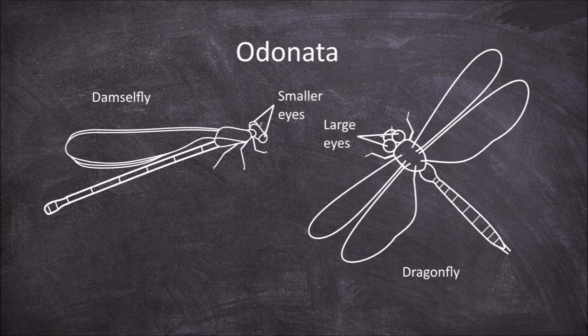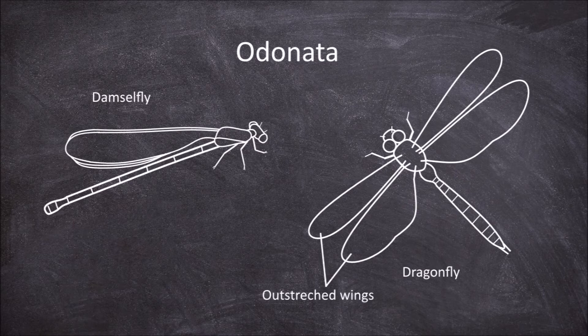The second feature is the placement of the wings over the body at rest. In dragonflies the wings are usually held spread out when at rest and not flying, whereas in damselflies when they are not flying the wings sit folded up together over their abdomen.